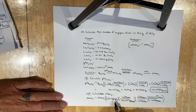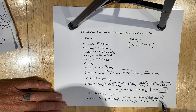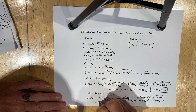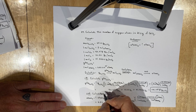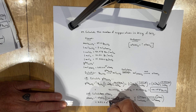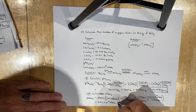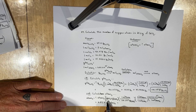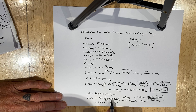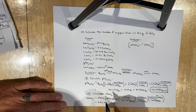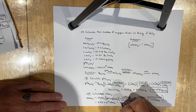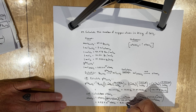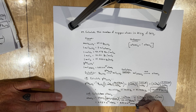We take the product of the numerators divided by the product of the denominators, and when you do that, you get an answer of 4.511 times 10 to the 23rd atoms of oxygen. Since the initial measurement 25.0 has three significant figures — the 2, 5, and 0 are all significant — this answer should have three significant figures. So we drop the last digit, and our final answer is 4.51 times 10 to the 23rd atoms of oxygen.